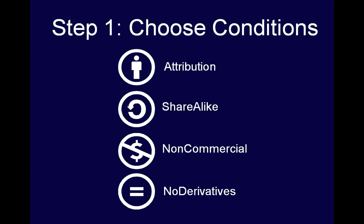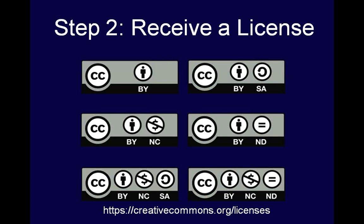The share-alike condition is contained in the license that Wikia uses — the CC Attribution Share-Alike license. The non-commercial condition prohibits commercial uses of the licensed content. The no-derivatives condition requires that any downstream users not alter the licensed work. After the creator has chosen the conditions they want to apply to their work, the final step is to simply receive the license on the CC site. These conditions can be mixed into a limited set of configurations, resulting in six licenses. You can view a description of each at creativecommons.org/licenses.